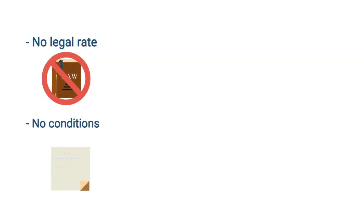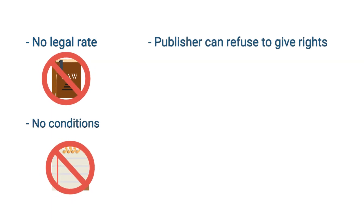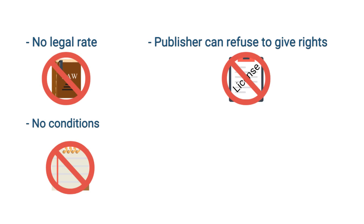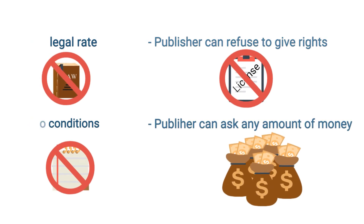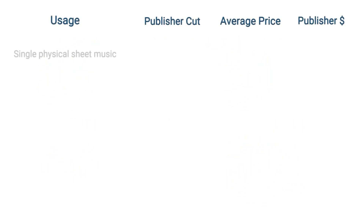Unlike the royalties from mechanical licenses, the royalties from print licenses are not subject to any legal rate. In fact, they are not subject to any conditions at all. If a music publisher wants to refuse to allow the printing of lyrics to one of their songs, they have the legal right to do so. Likewise, they can charge any amount of money for such usage. For single song physical sheet music — non-digital — the industry standard is a 20% royalty of marked retail price.